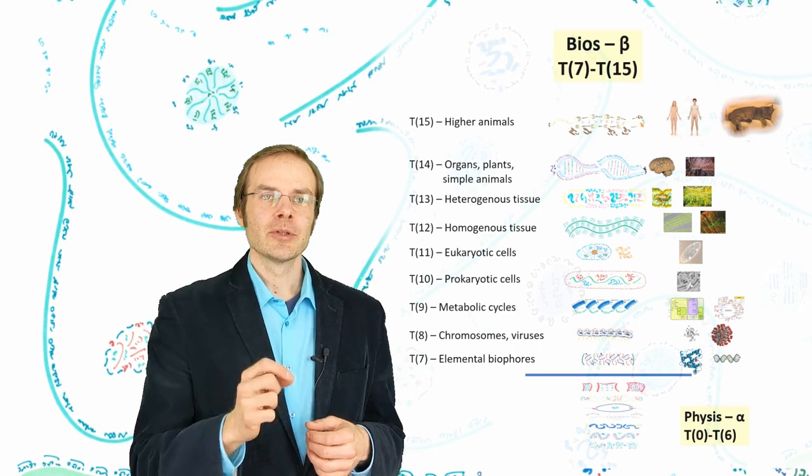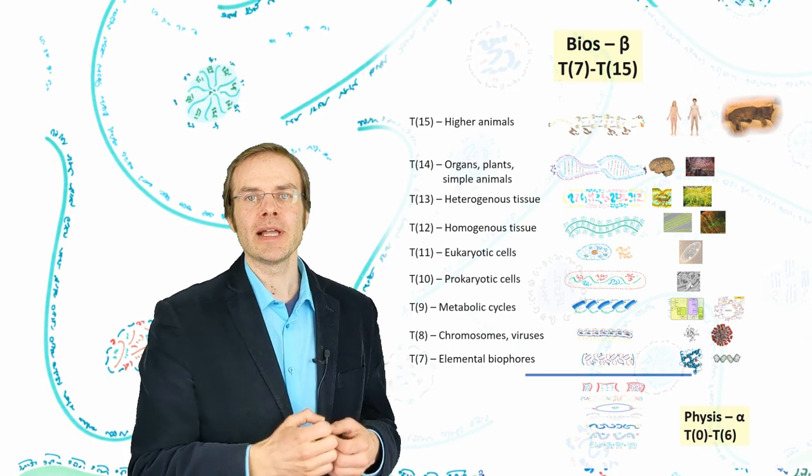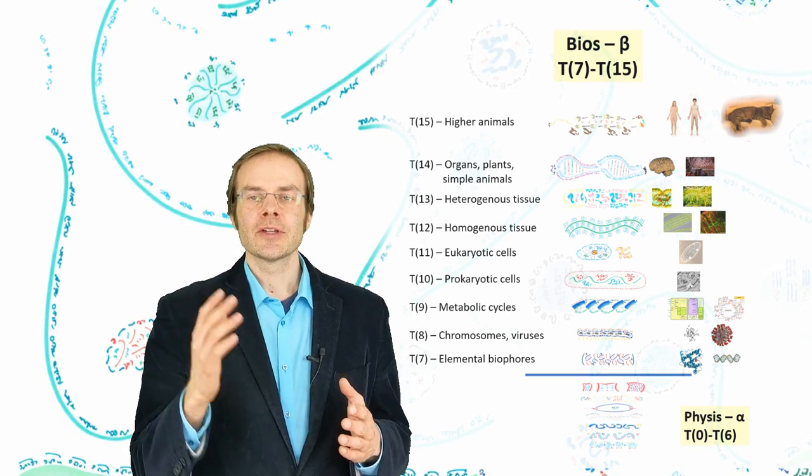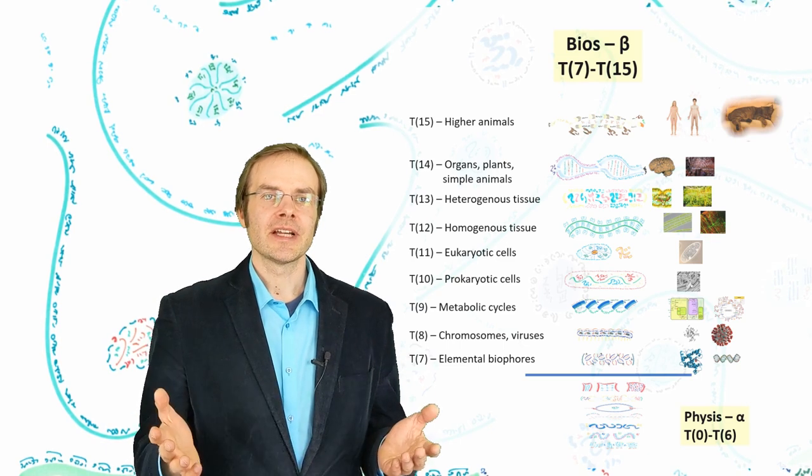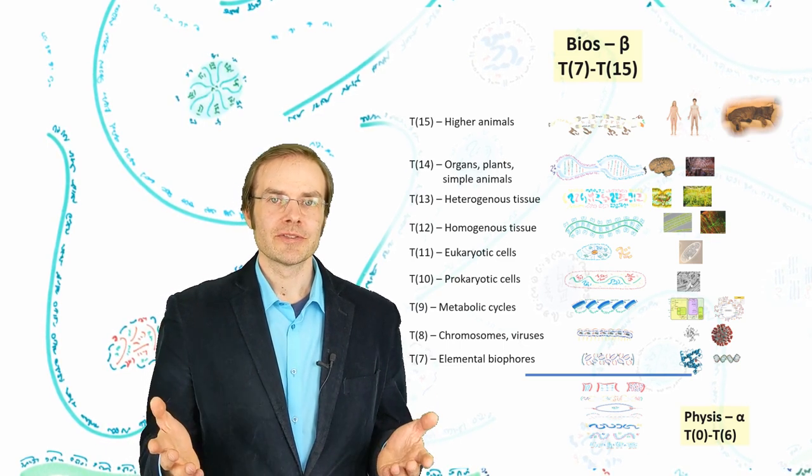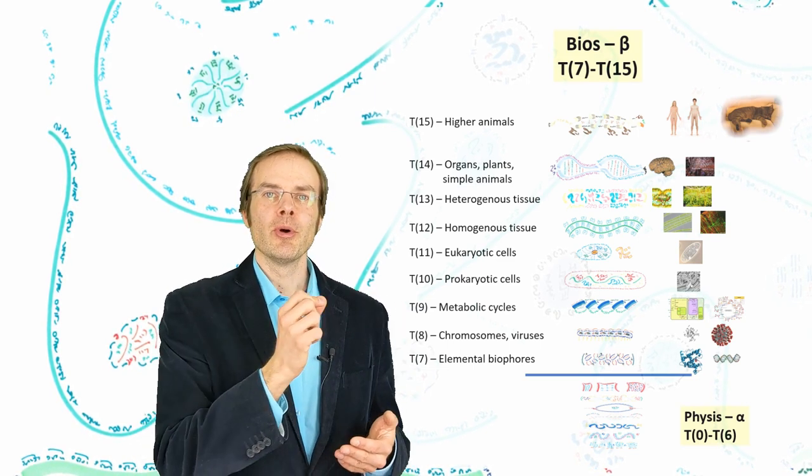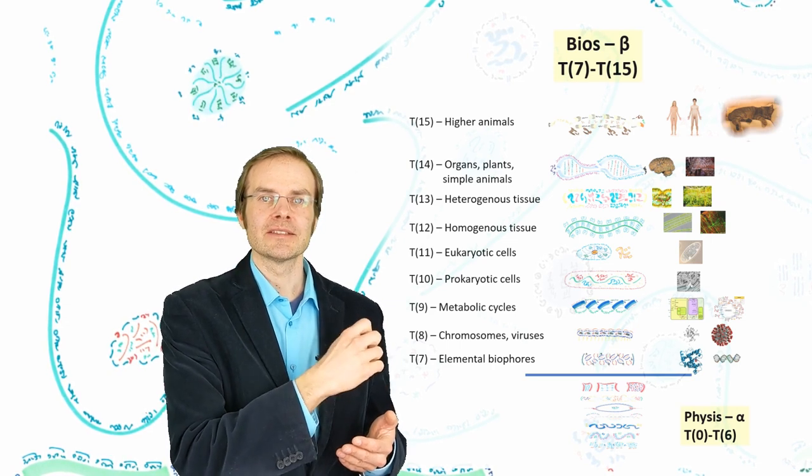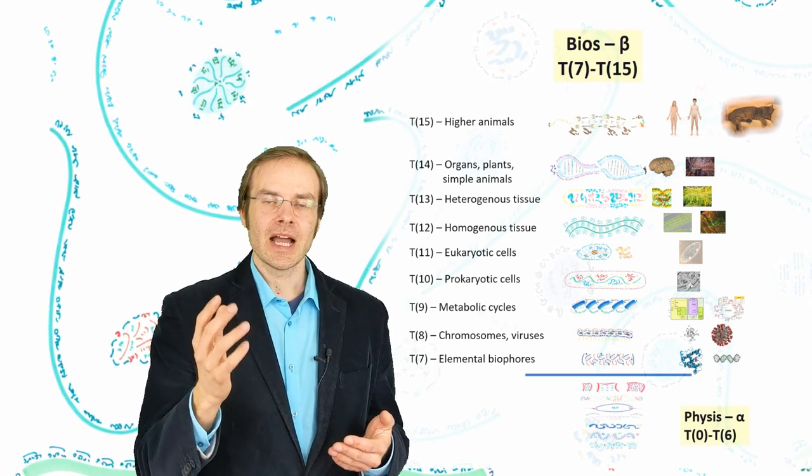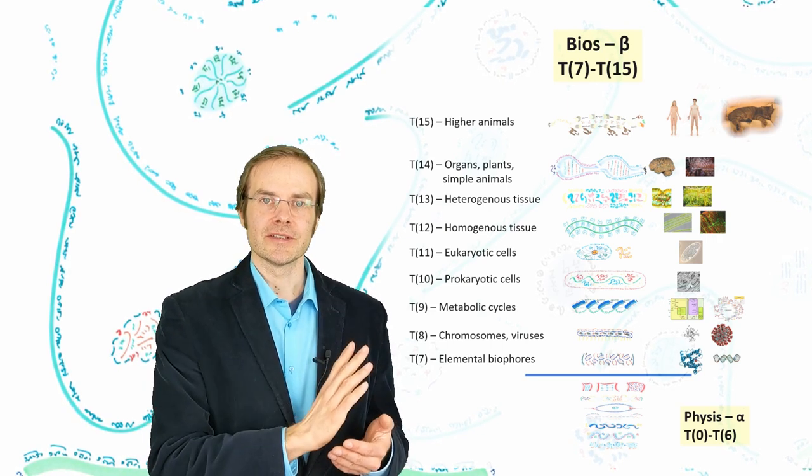One note on that. Heim put quite some brainpower into finding this layer structure for the biological realm. But it's not the last thing there is to say about this probably. So if science comes up with, biology comes up with new findings, there may be some shifting around here. And it's always disputable to where a form of life belongs if it belongs to one level of complexity or the next one. So I'm saying it's not chiseled into stone, but it's a very good working hypothesis that we have.